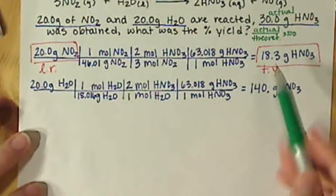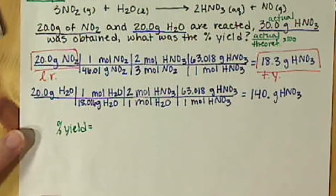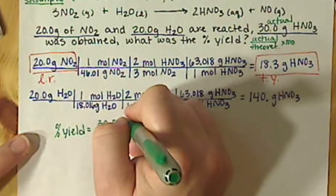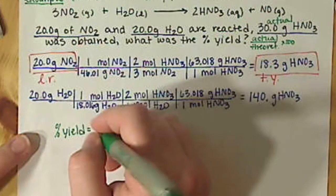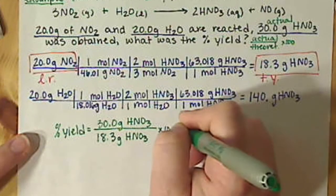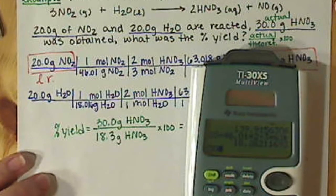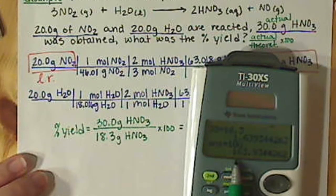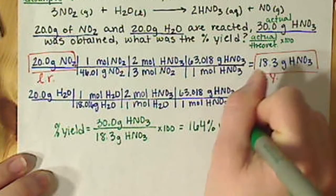So now we can calculate our percent yield. Our percent yield is our actual yield. Actual is 30.0 grams of nitric acid divided by our theoretical, 18.3 times by 100. We have 30 divided by 18.3 times 100. And we get 164 percent yield.